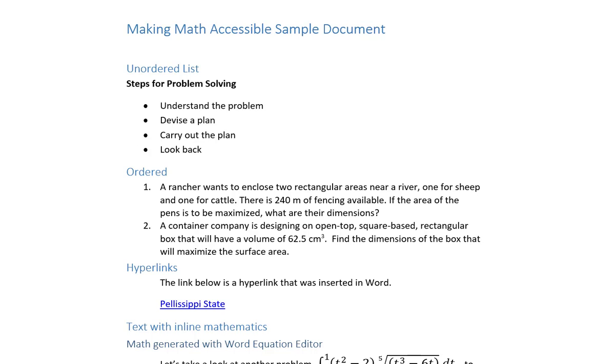Ordered. A rancher wants to enclose two rectangular areas near a river, one for sheep and one for cattle. There is 240 m of fencing available. If the area of the pens is to be maximized, what are their dimensions?